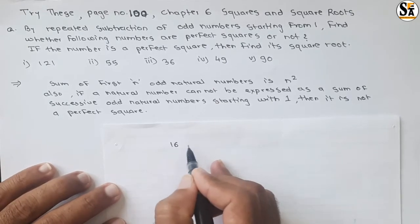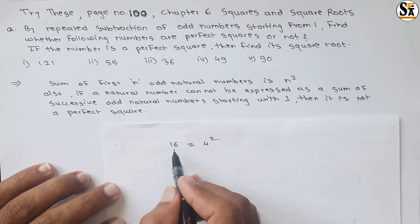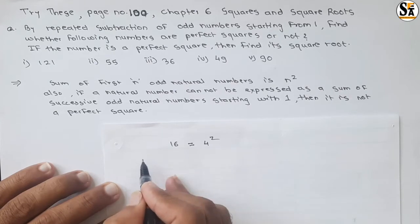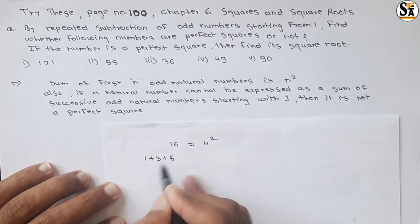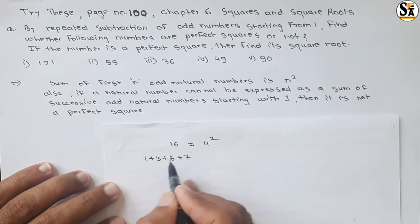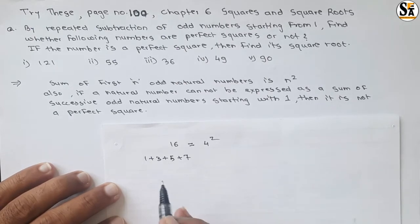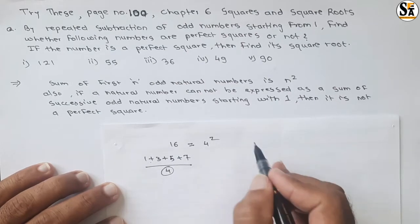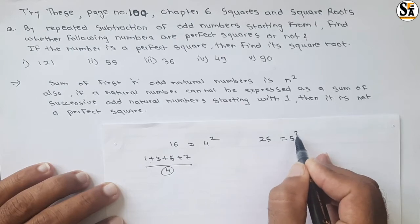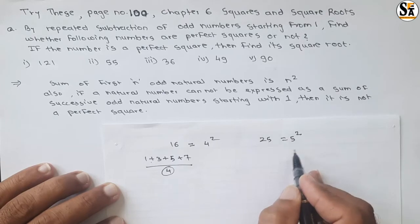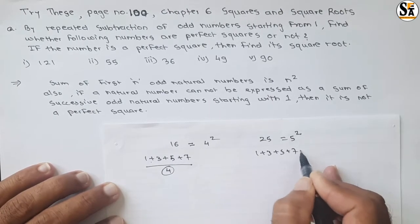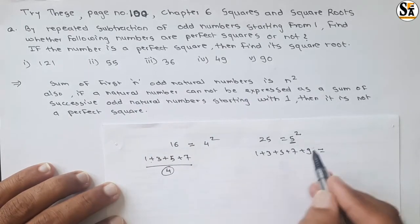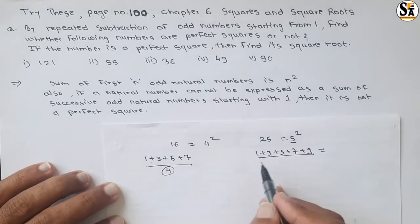For example, 16 is a perfect square and it is the square of 4. It can be written as a sum of odd numbers starting with 1: 1 + 3 + 5 + 7 = 16. If we add the first 4 odd numbers starting with 1, we get 16.